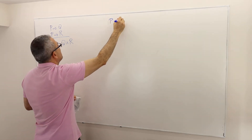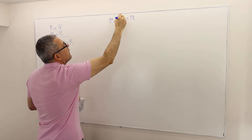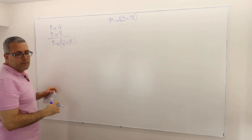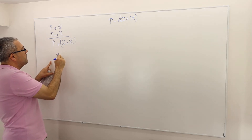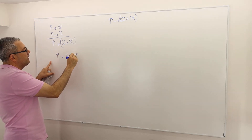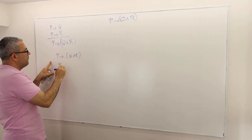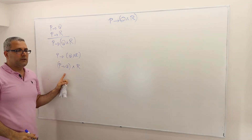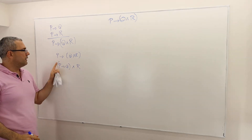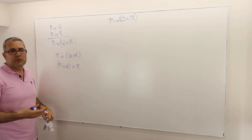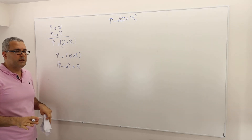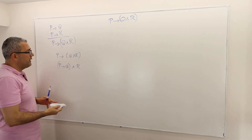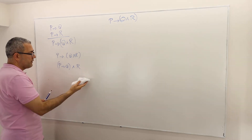Let's start noting it. This is how I should be writing it: P implies (Q and R) versus P implies Q and R. These are different statements, different sentences, and their truth values can also be different. So be careful about where the parentheses are.